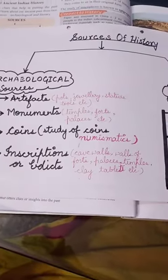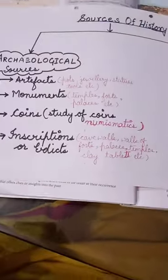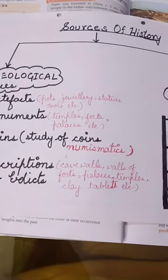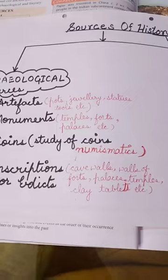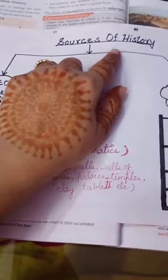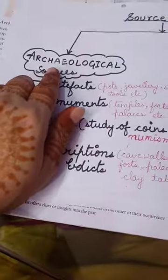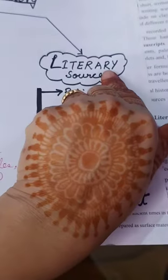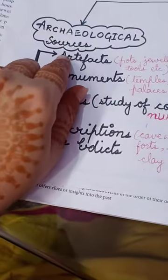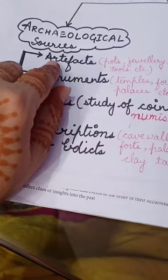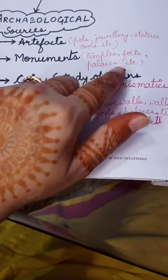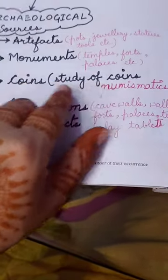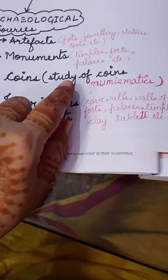Dear children, I have made this flowchart for you. We have learned all these things in the previous week, like sources of history — from where we are learning history. Archaeological sources and literary sources. In archaeological sources there are artifacts like pots, jewelry, statues, tools, etc., then monuments like temples, forts, palaces, etc., then coins.